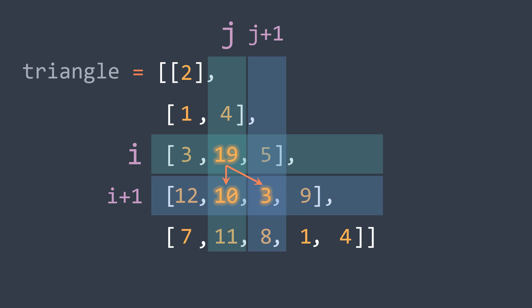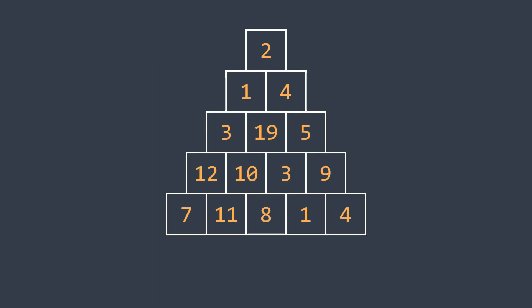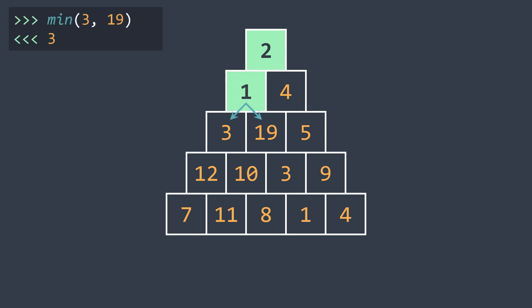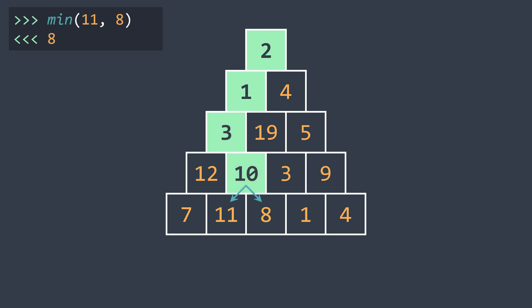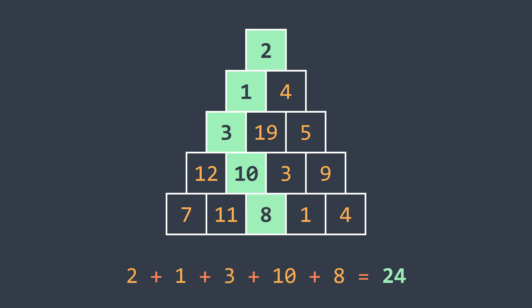Now we can start solving. The intuitive solution some of you probably got is to be greedy — to always choose the smaller value between the two adjacent cells to get the minimum path sum. By applying it to this triangle, we'd start at 2, then 1 is smaller than 4 so we go left, then 3 is smaller than 19 so we go left, then 10 is smaller than 12 so we go right, then 8 is smaller than 11 so we go right, and the total is 24.